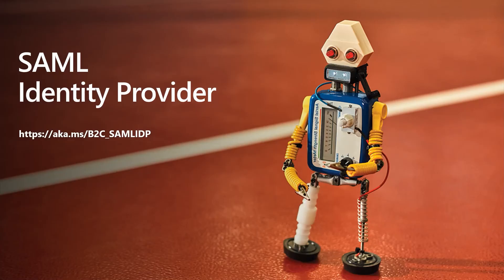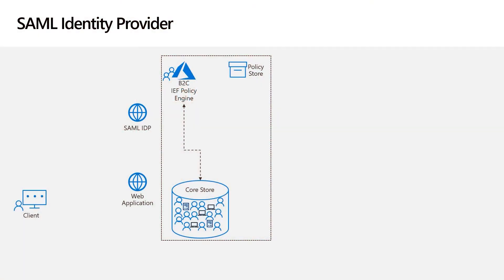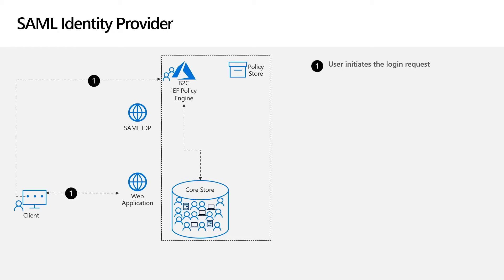Now that we know how B2C acts as a SAML service provider, let's look at how it integrates with an external identity provider using SAML. As with service provider integration, identity provider integration also requires an identity experience framework policy. The flow begins with the user authenticating to B2C. Notably, this does not have to be a SAML authentication — the authentication request could be any supported protocol, for example, OIDC.